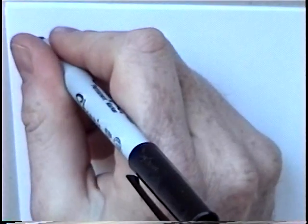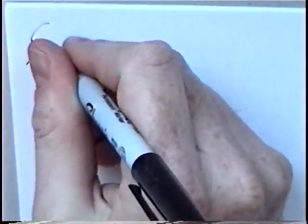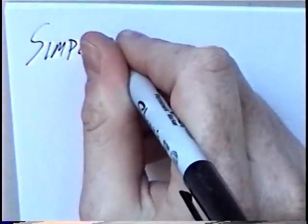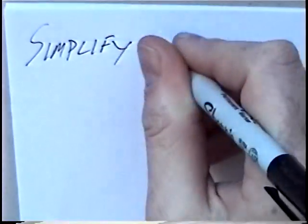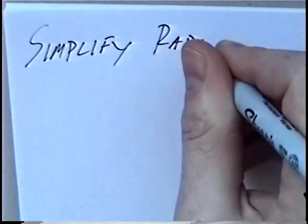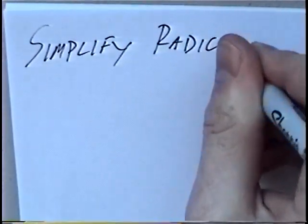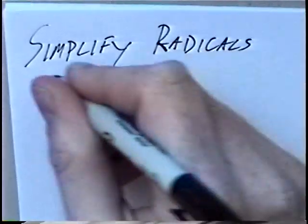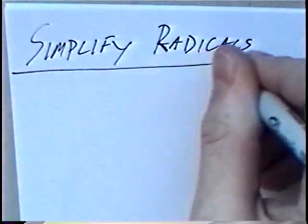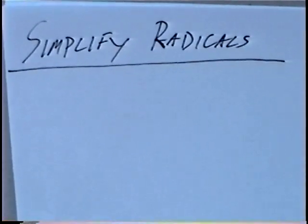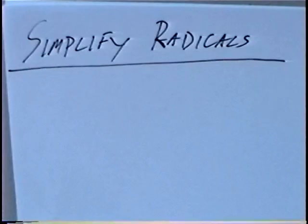The title of the first section is Simplify Radicals, and the section will simplify radicals by using factor trees.